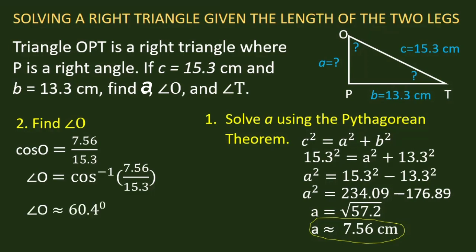Finally, we are going to find angle T. We know that angle P is already 90 degrees. The remaining angles of that triangle total 90 degrees. We already have 60.4 degrees, so we have 90 - 60.4 = 29.6 degrees.